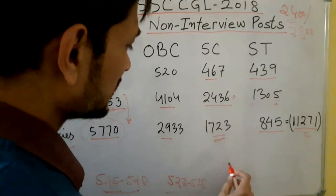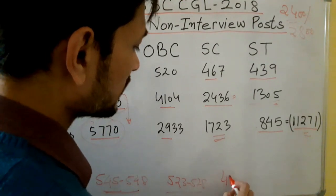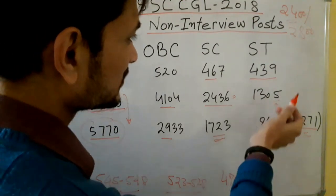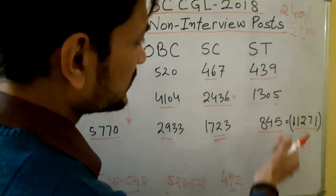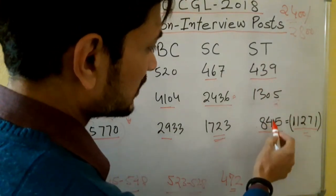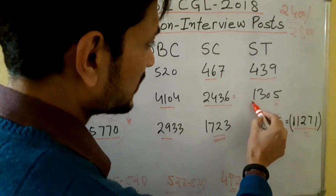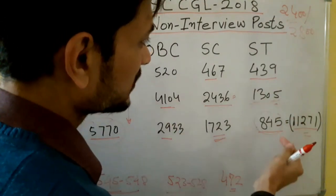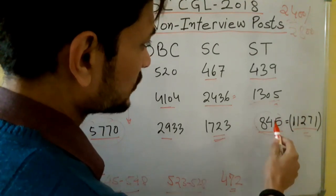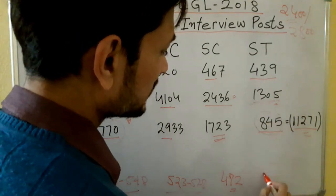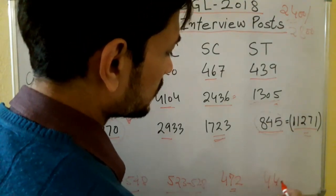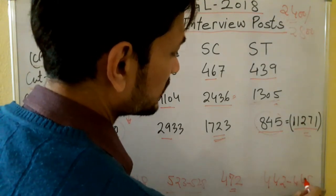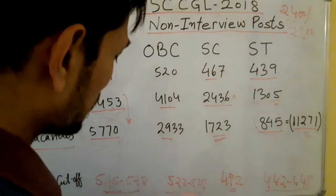As far as SC is concerned, the same case will apply — the final cut-off will be around 472. For ST as well, the same scenario: 845 vacancies and 1305 candidates, some will skip, some will qualify in UR category and take posts there. So the ST cut-off was 439, and the expected final cut-off will be 442 to 445 maximum. That will be the final cut-off for the non-interview post.